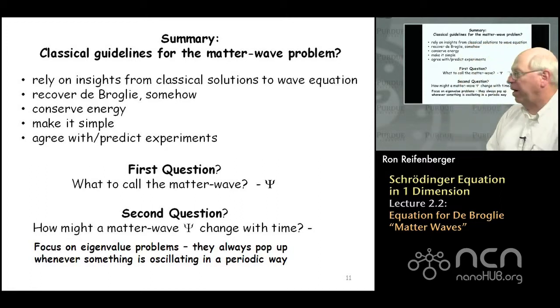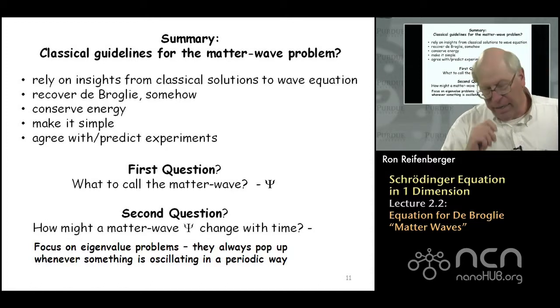So the first question that we're going to ask is what parameter do we use to characterize this matter wave? And the parameter that Schrödinger selected was the wave function ψ is going to describe this matter wave. And the second question is how might this matter wave change with time?